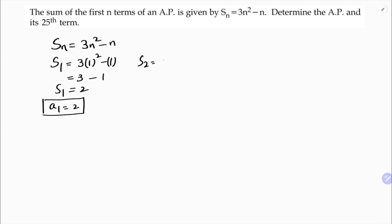Now calculate S₂. S₂ is 3 into 2 square minus 2, so 3 times 4 minus 2 which is 12 minus 2, which is 10. S₂ is 10. S₂ is the sum of two terms, a₁ plus a₂. But a₁ is already 2, so 2 plus a₂ is 10, so a₂ is 10 minus 2 which is 8.